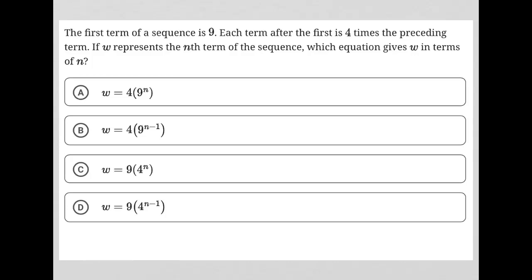So this question says the first term of a sequence is 9. Each term after the first is 4 times the preceding term.